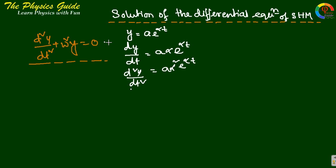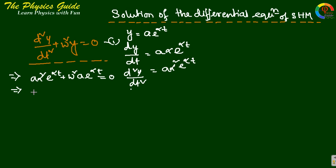Substituting into equation 1, we get aα²·e^(αt) + ω²·a·e^(αt) = 0. This implies α² + ω² = 0, which gives α = ±iω.